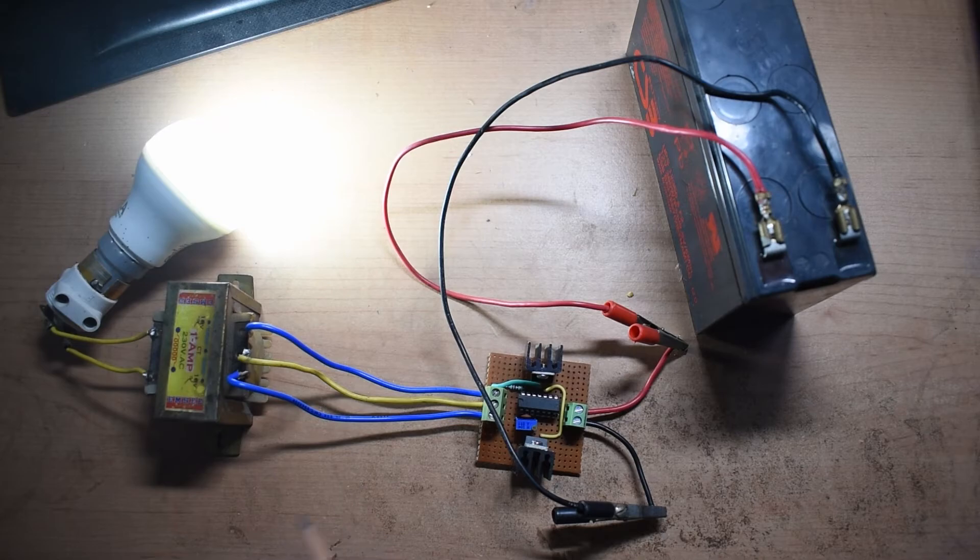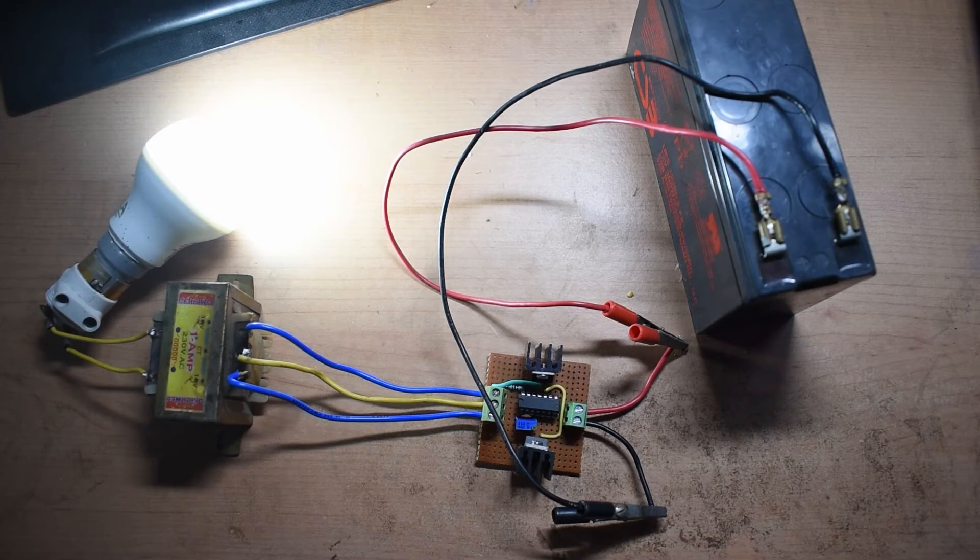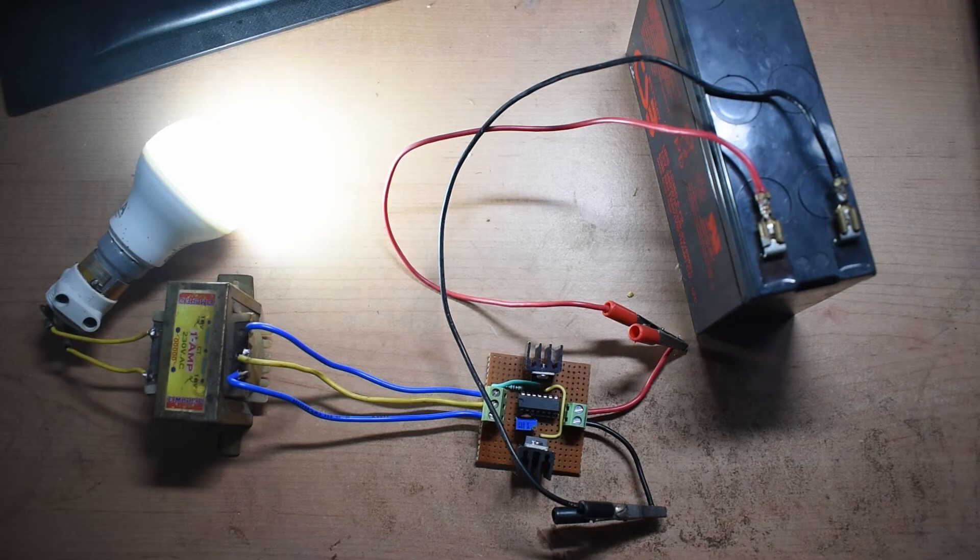Now this transformer is rated at 1 amp 12 volt which means it's a 12 watt transformer. So using a bigger transformer you can get more output from the same circuit itself and even if you want a 2000 or 3000 watt inverter you can easily make that by putting more number of MOSFETs in parallel.